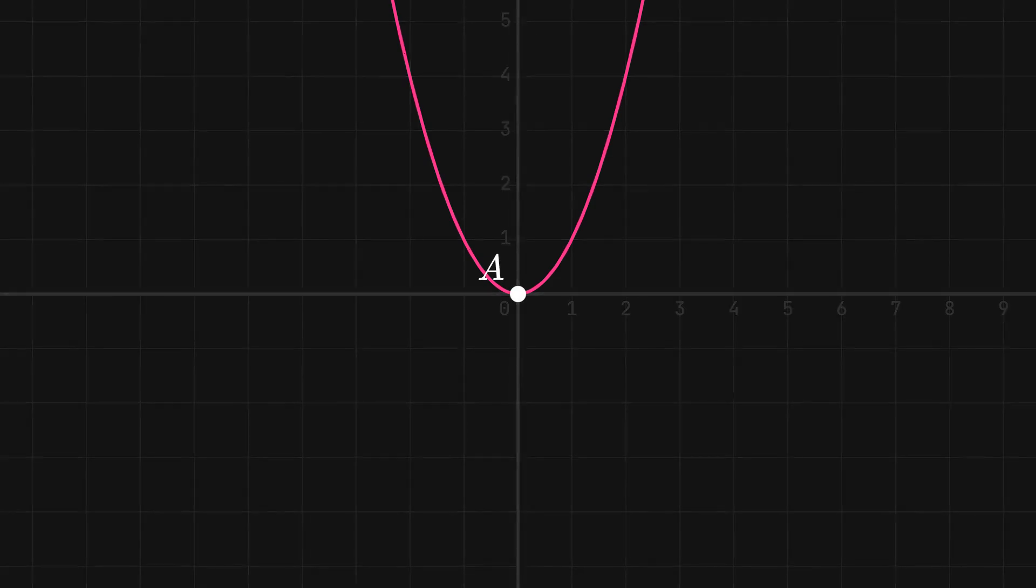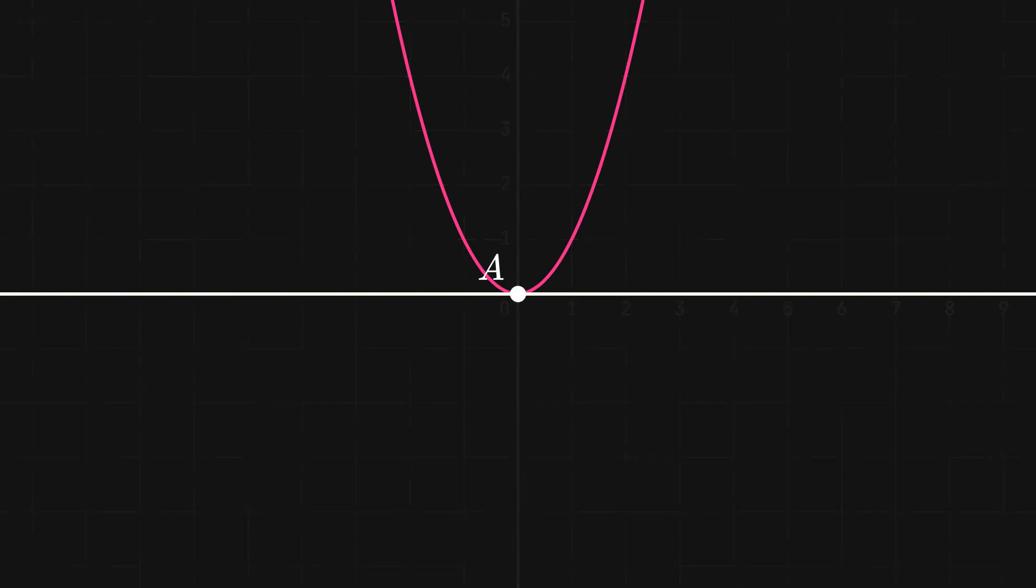What if we want to find the rate of change at a certain point? Let's look at the same graph of x squared again. At point A, we can see that its slope will be horizontal, but how could we prove that?